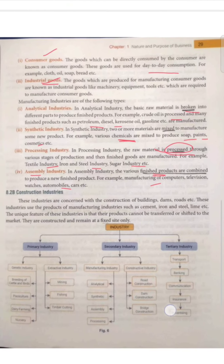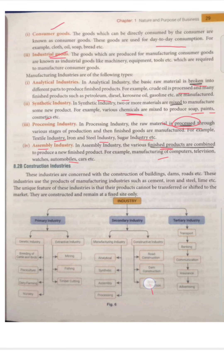Construction industries are concerned with construction of buildings, dams, and roads. These industries use products of manufacturing industries — for example, cement is manufactured and then used here in construction.